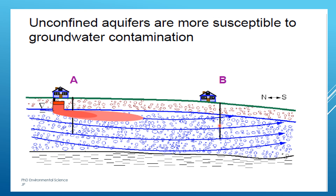The blue lines represent the water table and general direction of groundwater flow within the unconfined aquifer. The unconfined aquifer is directly beneath the surface and lacks an overlying impermeable layer. This diagram clearly shows how unconfined aquifers, due to their direct exposure to the surface, are more prone to contamination from surface pollutants. Wells drawing from unconfined aquifers like the one near house A can be quickly impacted by nearby contamination sources, highlighting the need for careful monitoring to protect drinking water wells from pollution.